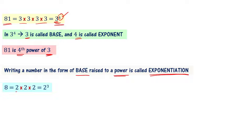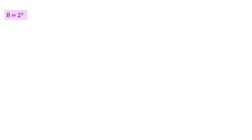8 can be written as 2 into 2 into 2, which means it is 2 cube. Here the base is 2 and the exponent is 3. Since 8 equals 2 cube, we can write 2 into 4 as 2 power 1 times 2 squared. So 2 into 4 is 2 power 1 times 2 power 2, which equals 2 power 1 plus 2, that is 2 cube.